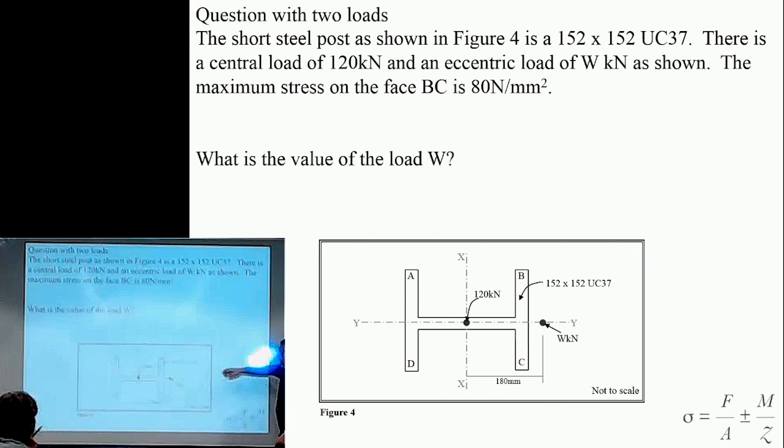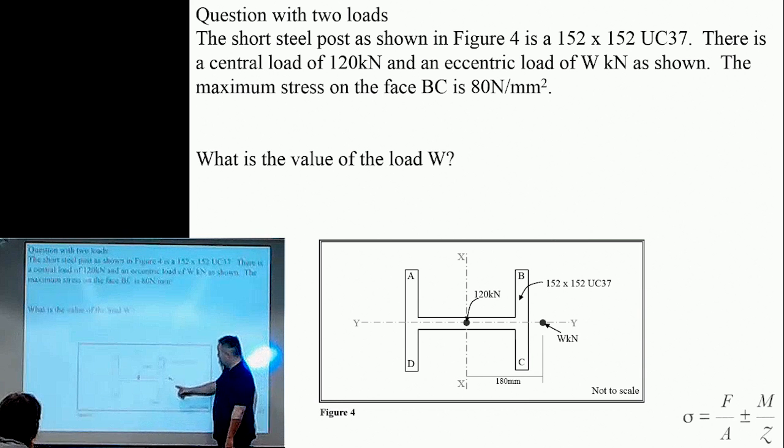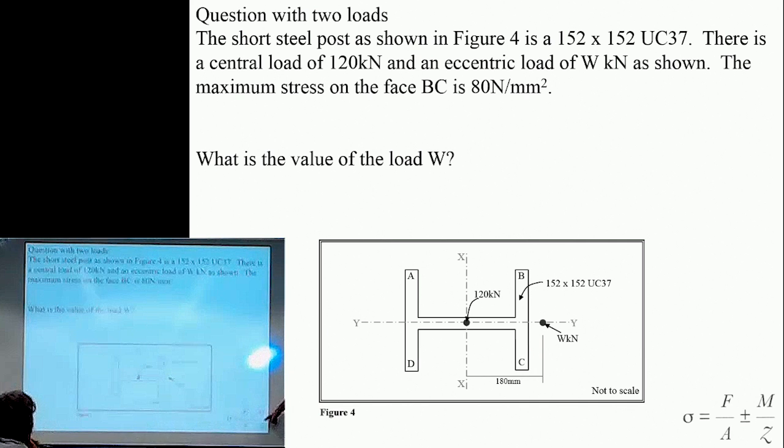We can put in the 120 divided by our area, quite easy. In terms of the M, we need our moment. What is our moment? Our moment is W times by 180, and then we've got our Z value.